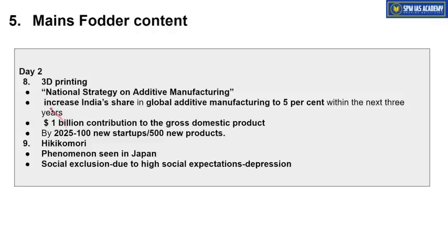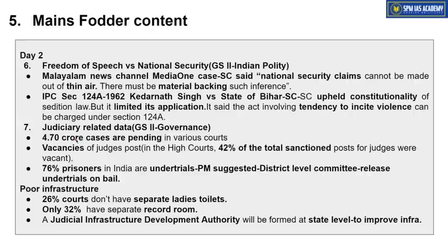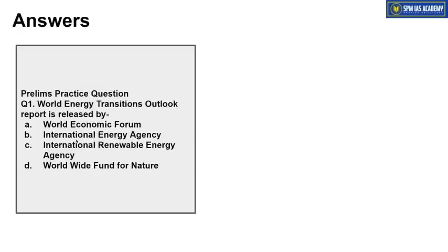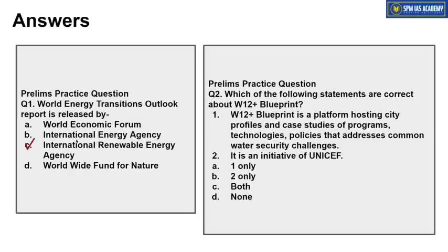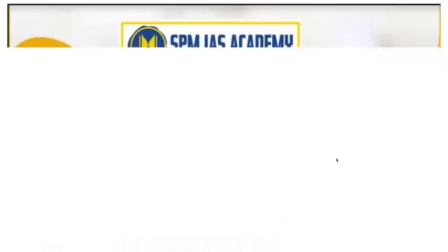3D printing, Hikikomori — all these topics have been covered. For each sub-segment like governance or ethics, we will collect around 100-200 such data points. World Energy Transition Outlook Report is released by the International Renewable Energy Agency. Regarding the W12+ blueprint phenomena — the first statement is correct but the second is wrong. It is not an initiative of UNICEF; it is an initiative of UNESCO. So the correct answer is Option A — one only. That's all from our side for today, thanks for watching.